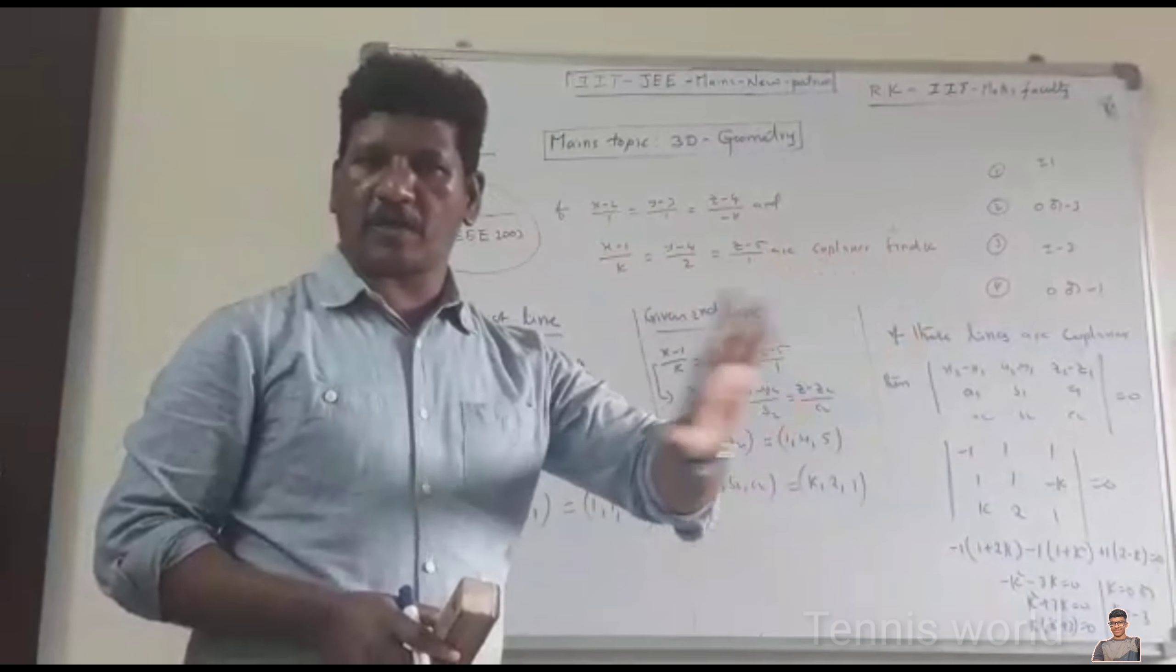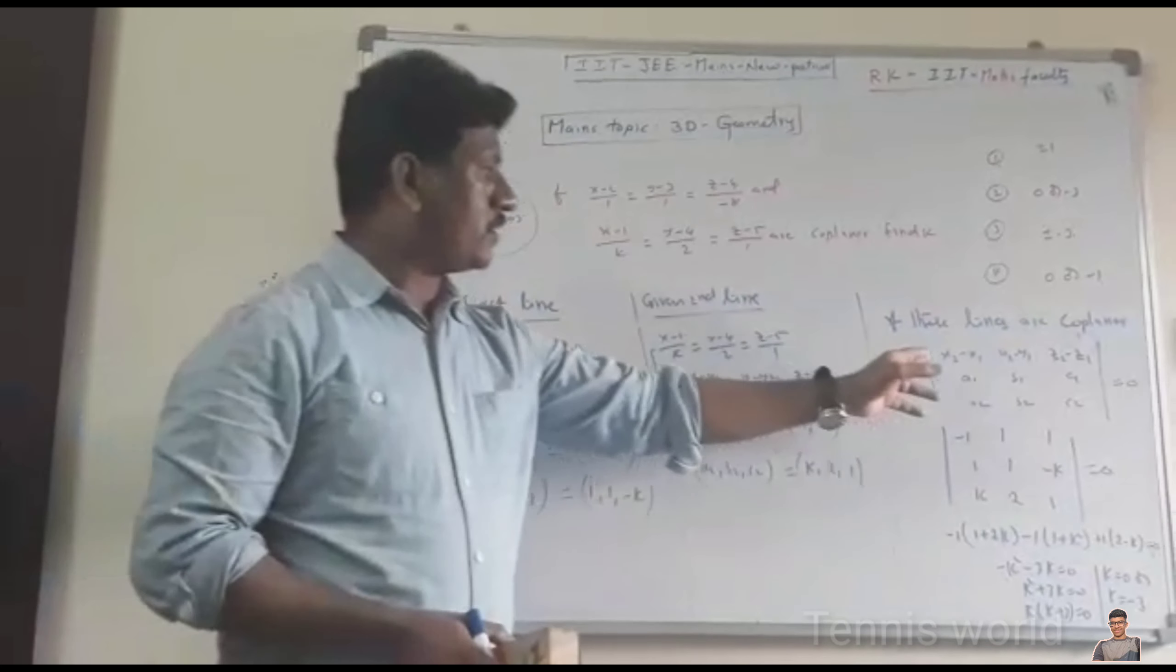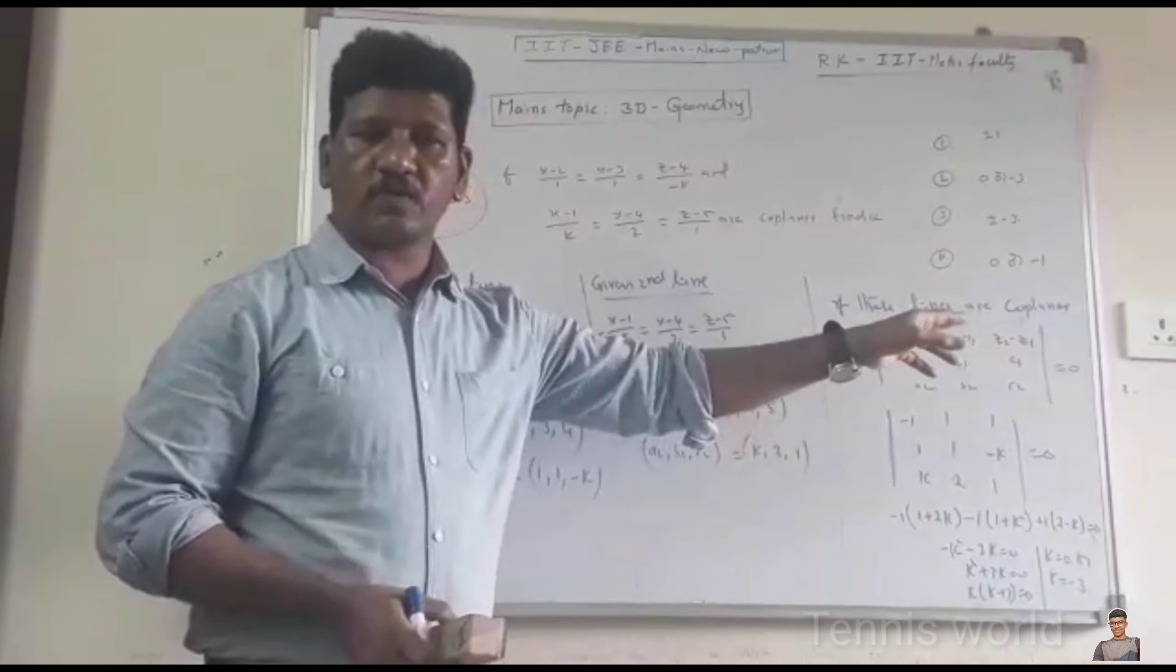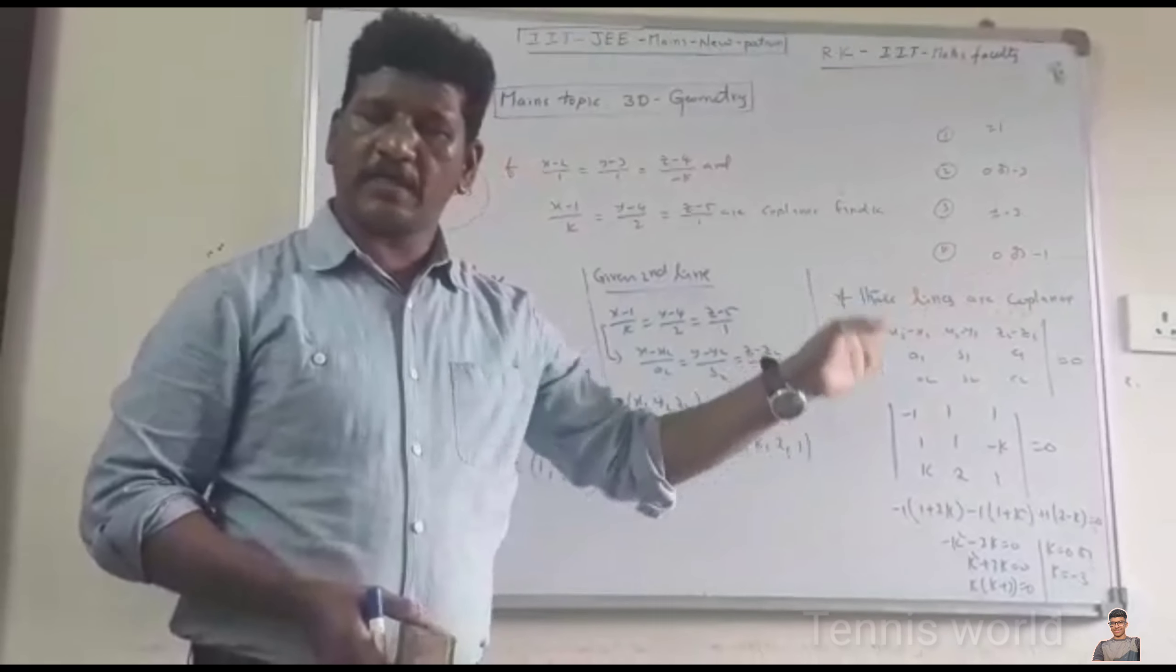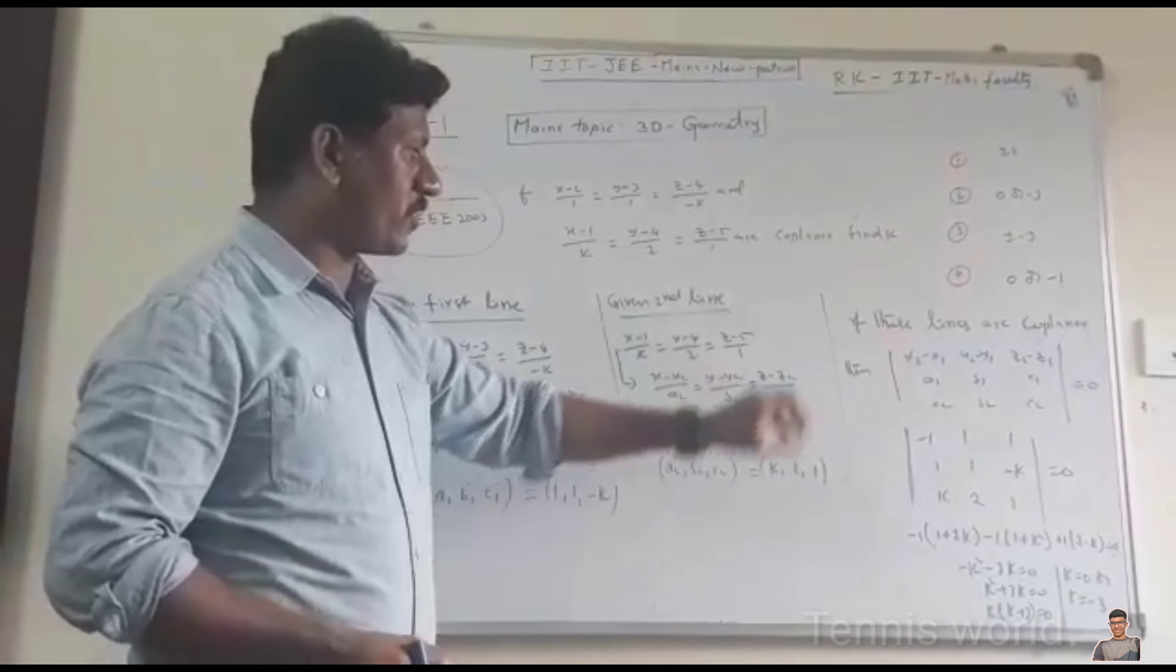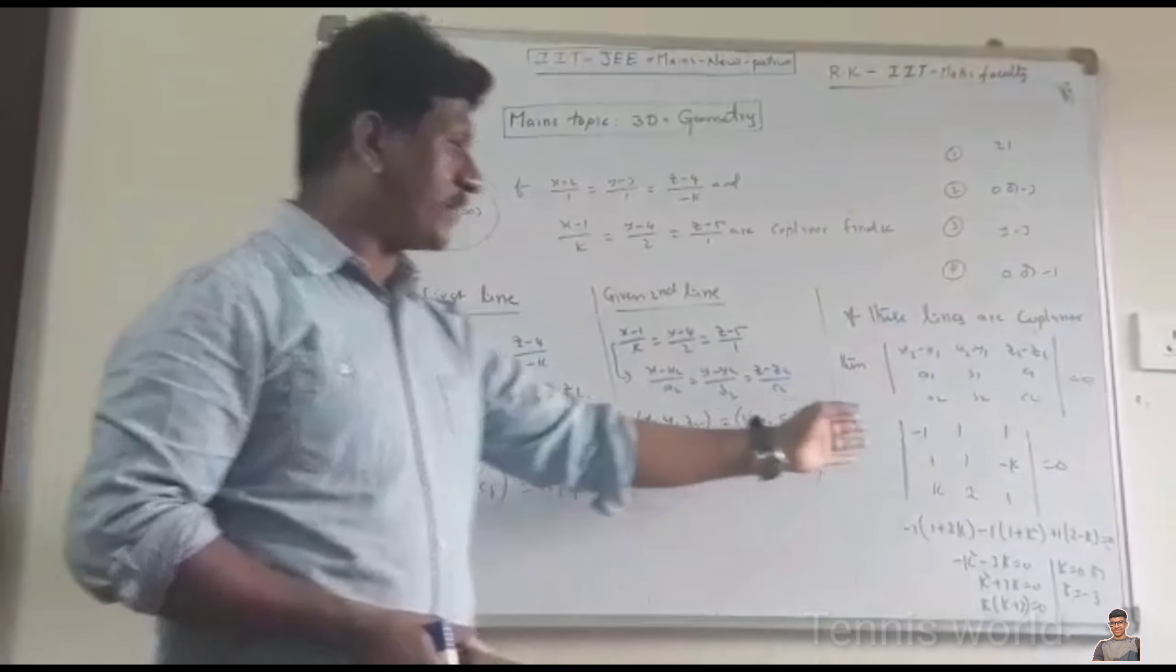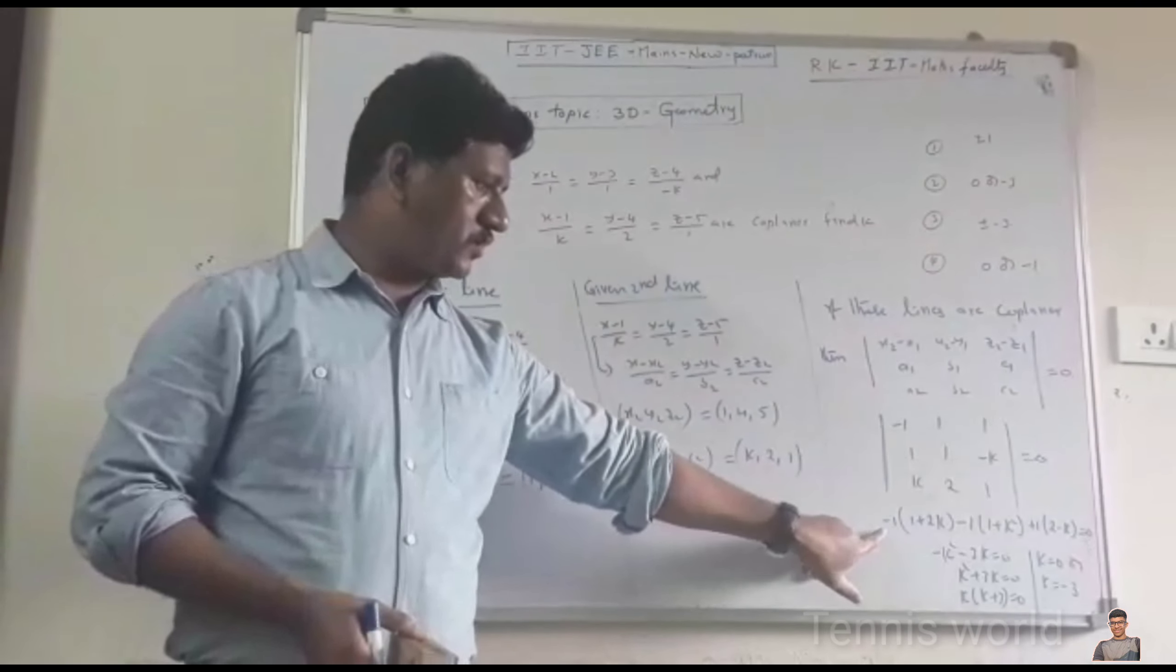The lines are coplanar. Then use the most important formula of coplanar condition. The determinant of X2-X1, Y2-Y1, Z2-Z1; A1, B1, C1; A2, B2, C2 is equal to 0. So keep all these parameters here and you find out the determinant, then you will get after simplification this step.